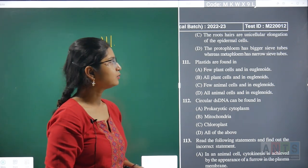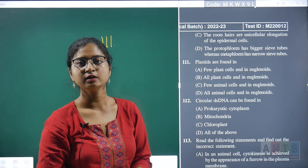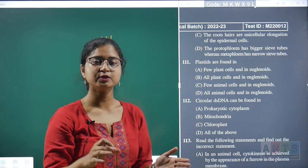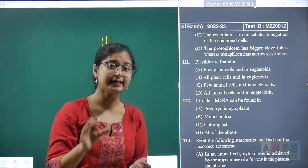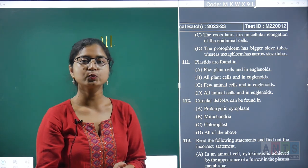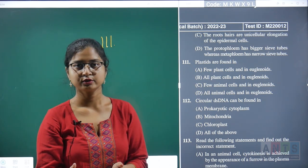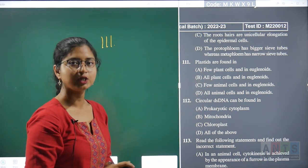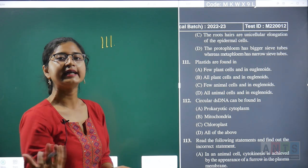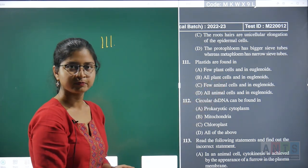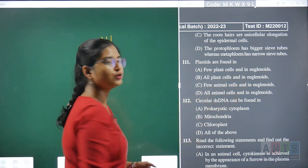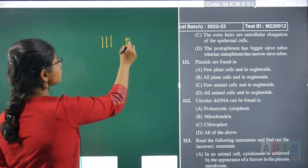Question 111: plastids are found in — we use plastids as a distinguishing feature between plant and animal cells. The most famous plastid is chloroplast, the site of photosynthesis. Apart from plant cells, plastids are also found in euglenoids. A variety of plastids — chloroplast, chromoplast, leucoplast — are observed in all plant cells. Hence, our correct answer is all plant cells and in euglenoids, option B.